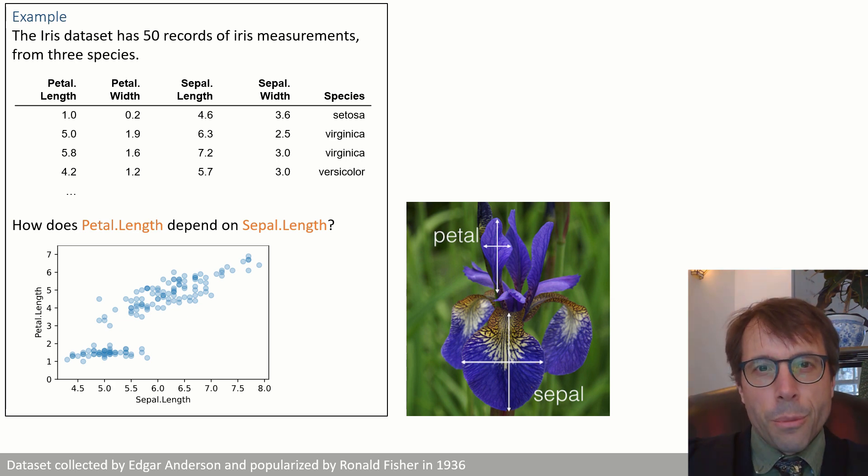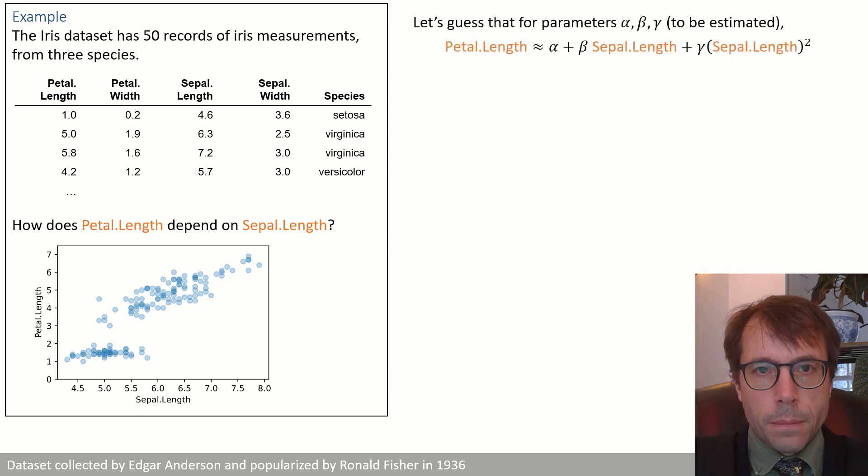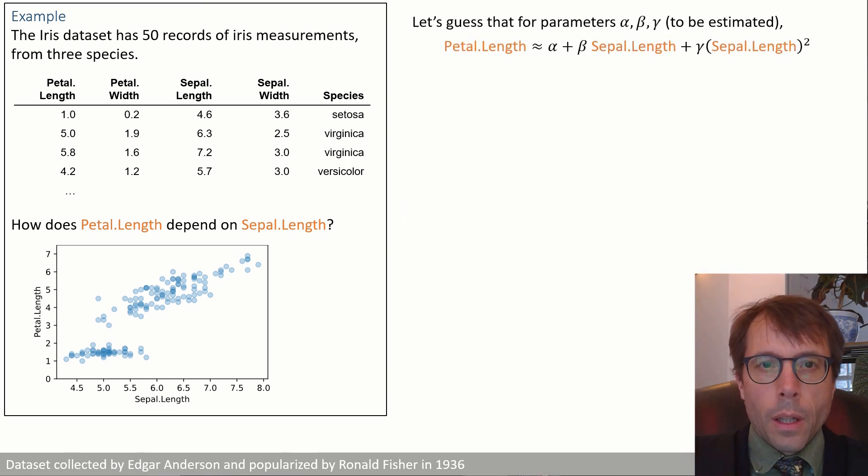Let's guess it's a very simple non-linear function, let's say quadratic. Let's guess that petal length is alpha plus beta times sepal length plus gamma times sepal length squared for some constants alpha, beta and gamma which we'd like to estimate from the data.